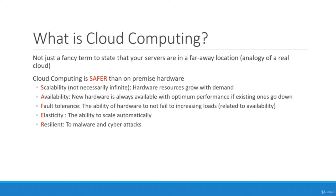Cloud computing offers scalability — hardware resources can grow with demand. Scaling out means adding servers of the same configuration; scaling up means increasing the power of existing servers. Availability means if one server is down, another is automatically and immediately available. Fault tolerance means your hardware is fail-safe — it should not fail under increasing loads, which is a very important aspect of cloud computing.